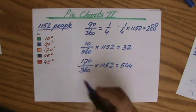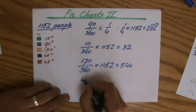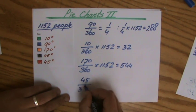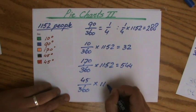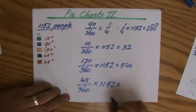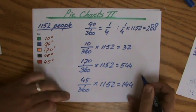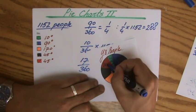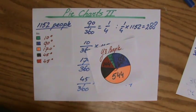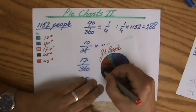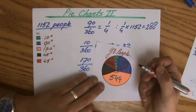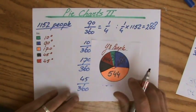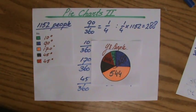Now for my remaining - they should be the same, by the way, shouldn't they? 45 degrees for black. 45 out of 360. How many people did I ask? 1152. If you work it out, it is 144 people. So actually 144 people like red, and 144 like black. That's how you calculate the amount of people in this case who like a particular color.